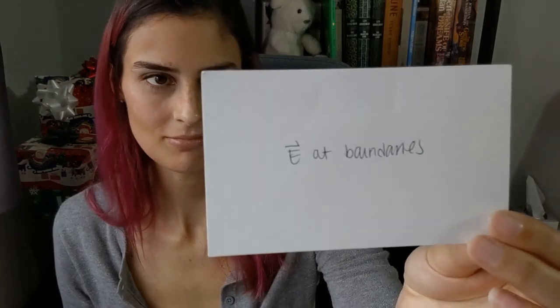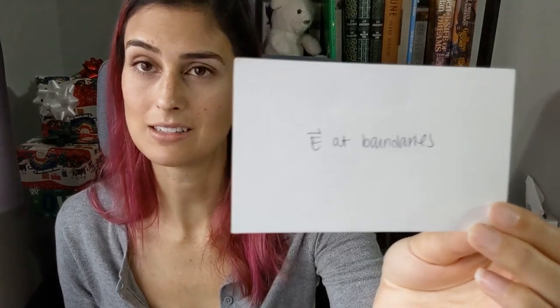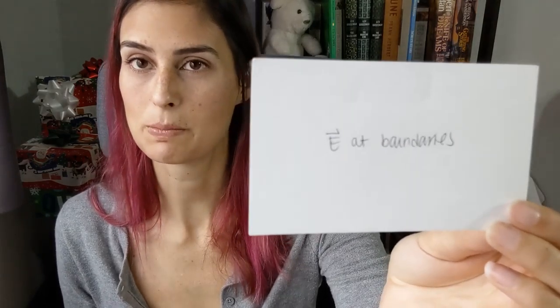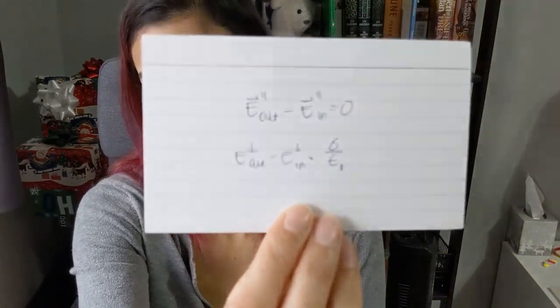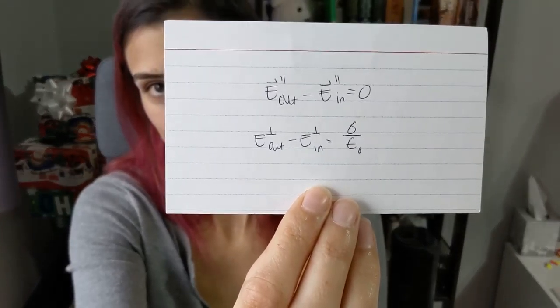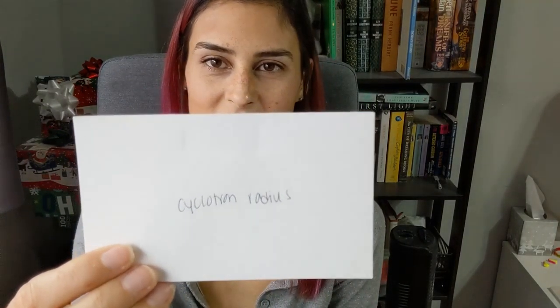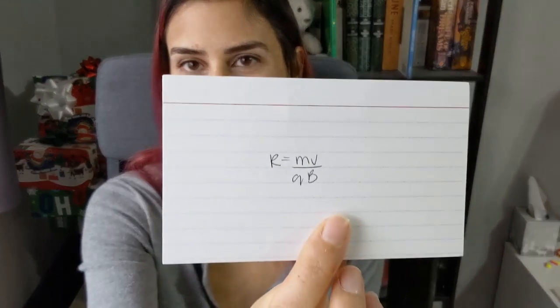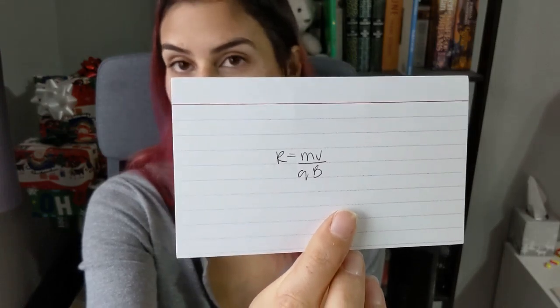The electric field at boundaries — this was a hard one. The parallel components out minus in should equal zero, and the perpendicular components out minus in should equal sigma over epsilon naught. Cyclotron radius: r equals mv over QB, where Q is the charge and B is the magnetic field.